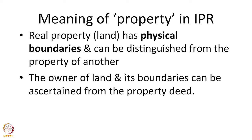Intellectual property does not exist in time and space like real property, because intellectual property deals with creations of the mind — like an invention, an idea, or an expression of an idea. We need some form by which we can ascertain the limits of such property. When a person comes up with an invention — say, an improvement in an internal combustion engine — the improvement rests inside the engine. It is not possible for a person looking from outside to ascertain where the invention is or which part of the improvement makes the engine better, unless it is described in detail in writing. It would be very hard to understand the contribution without analyzing, breaking down, or reverse engineering it.